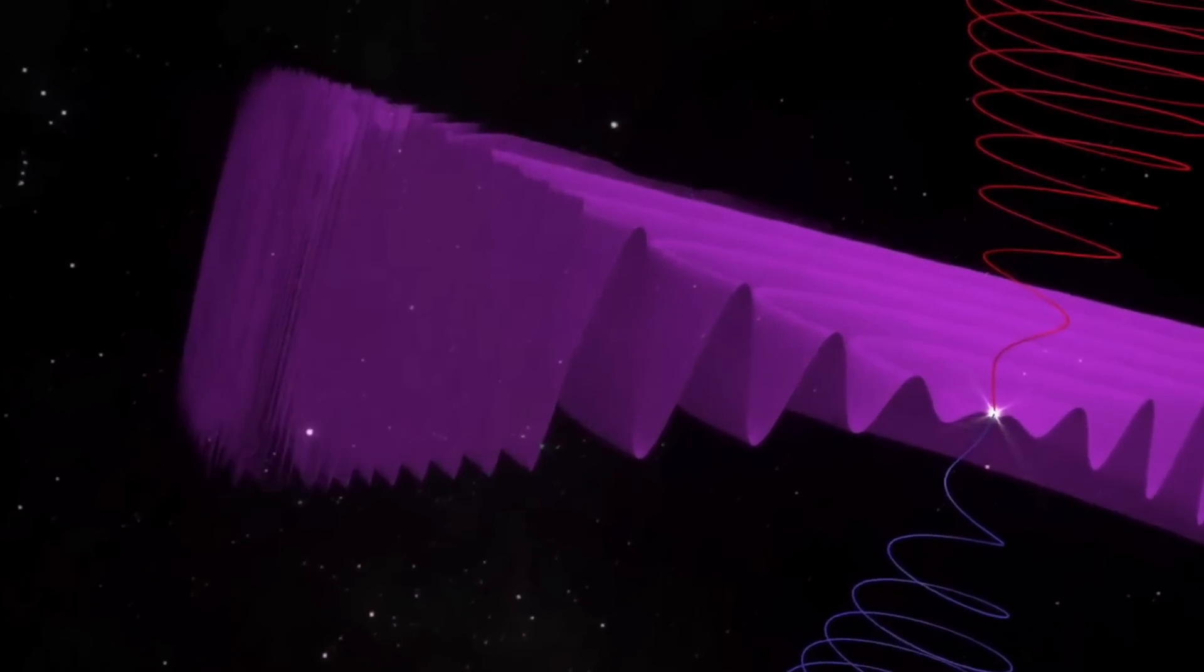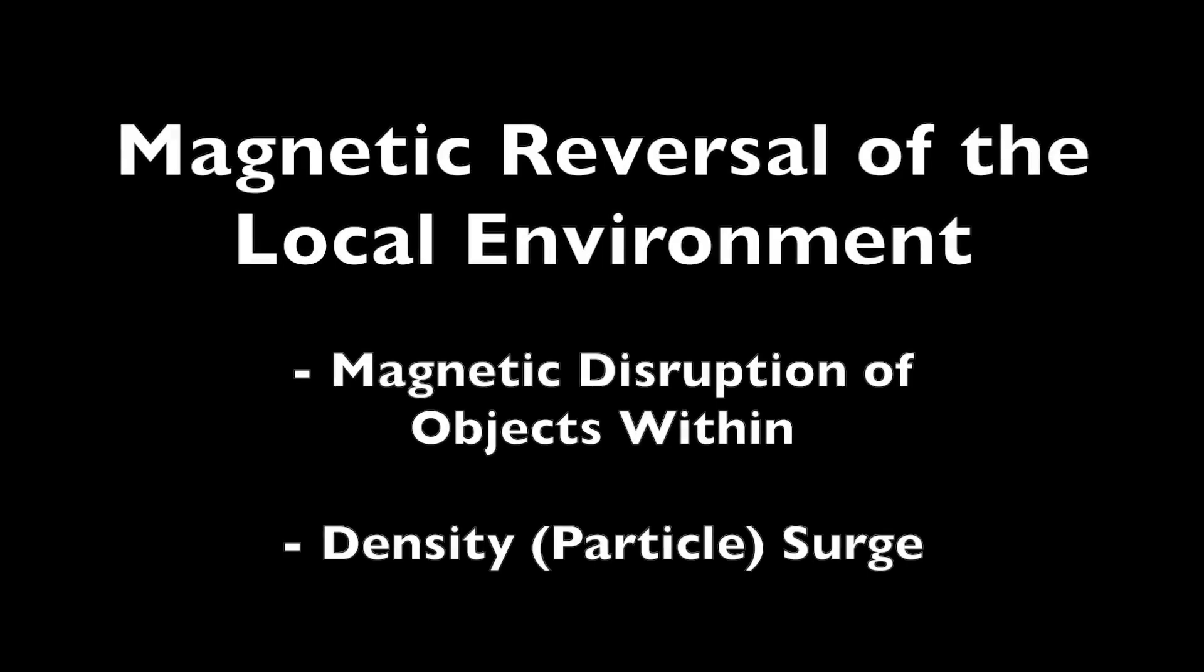These are the key components of any current sheet system with a spinning sphere magnet in the middle. Crossing the sheet causes a localized magnetic reversal of the ambient environment while also bringing more particles.